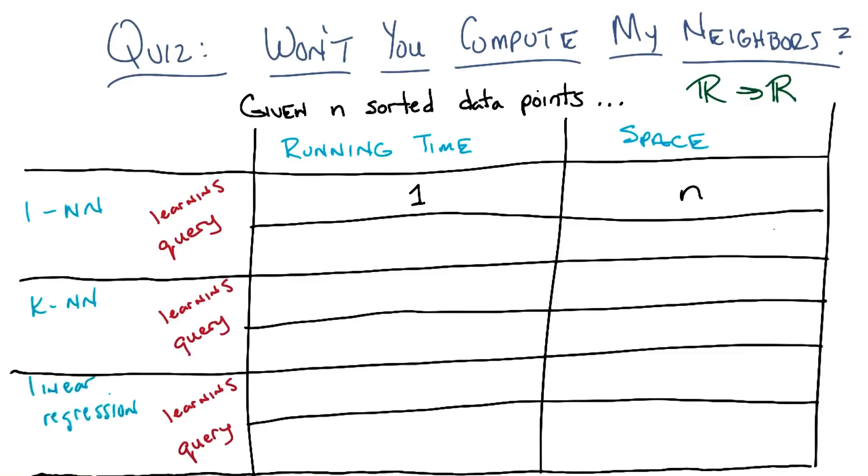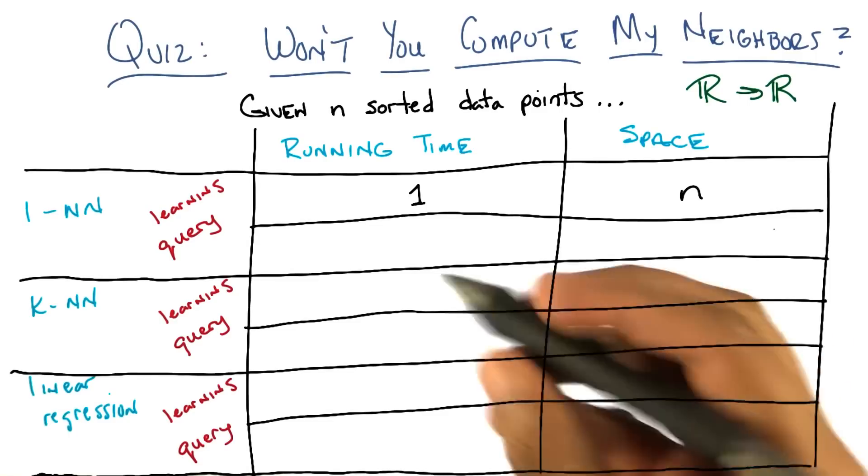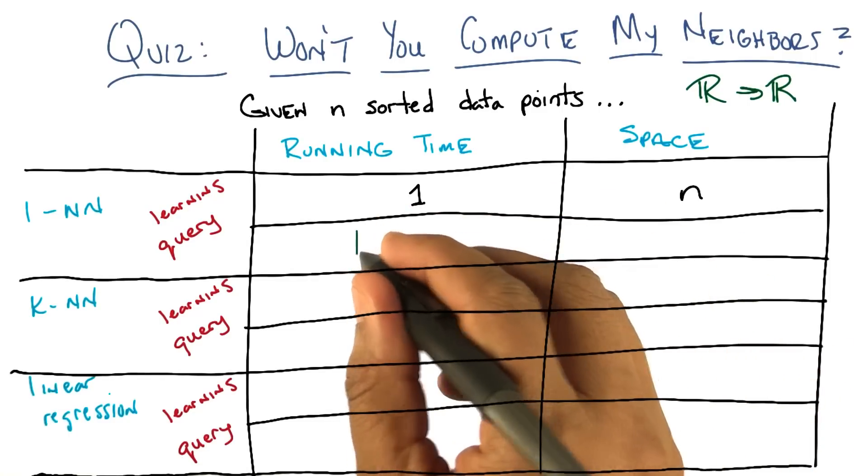we need to find the nearest neighbor. Which we could do by taking the query point and running through the whole list, and seeing which one is closest to. But because it's sorted, I think we ought to be able to use binary search. And in log time, find the closest point to the query. That's exactly right. You should be able to do that in log base two time.